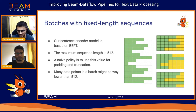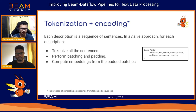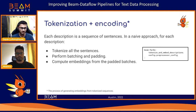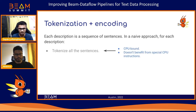Zooming in on the tokenization and embedding generation step — remember each description is a sequence of sentences. In the naive approach, for each description we take all the sentences, tokenize all of them, pack them into a batch, pad the batch, and then compute embeddings from the padded batch.